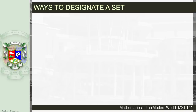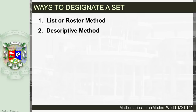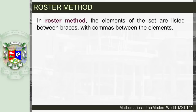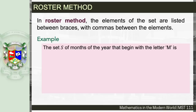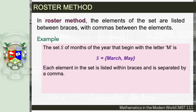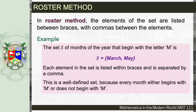There are different ways to designate a set: the list or roster method, the descriptive method, and the set builder notation. In the roster method, the elements of the set are listed between braces with commas between the elements. For example, the set S of months of the year that begin with the letter M is {March, May}. This is a well-defined set because every month either begins with the letter M or does not.